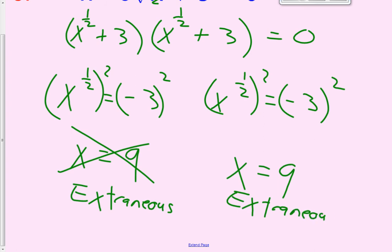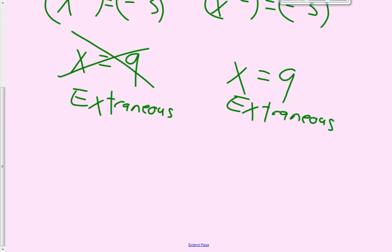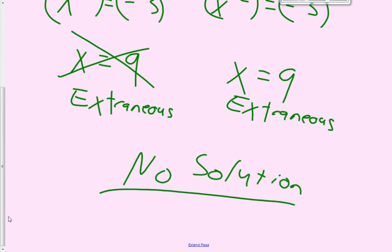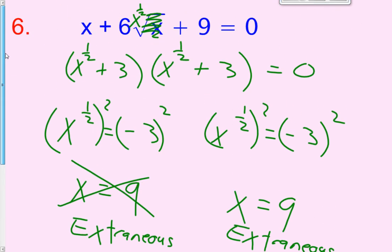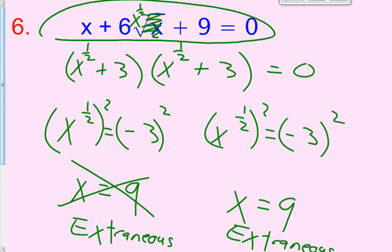So what just happened? Both binomials were the same, both roots are the same — x equals 9 — and both are extraneous. This one is no solution. There is not a single number that exists that would make this equation true.